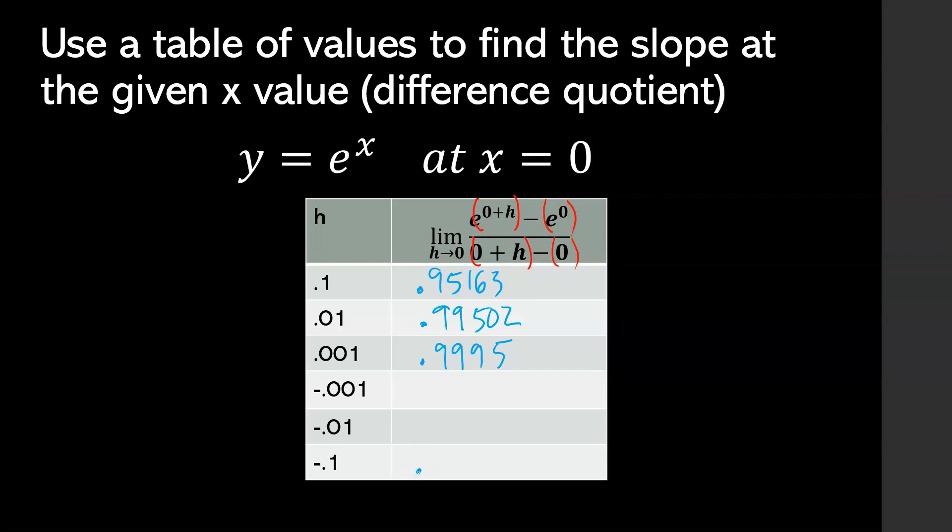Let's choose h values less than 0. Down with negative 1 tenth, our structure gives us 0.95163. I see some symmetry. At negative 1 hundredth, 0.99502. At negative 1 thousandth, 0.9995. So hopefully you think this limit is definitely equal to 1, or the slope of the tangent line of e to the x, right here at x equals 0, is 1.